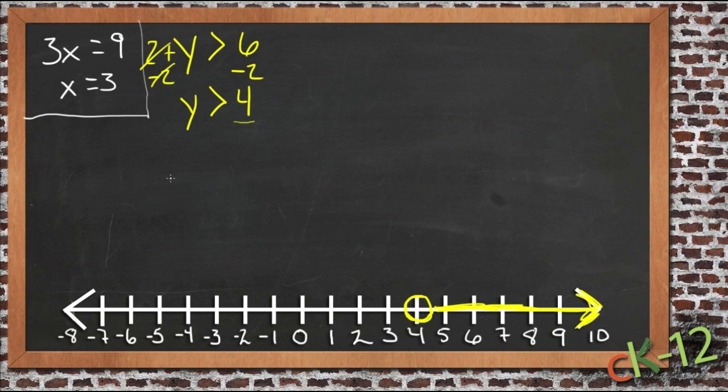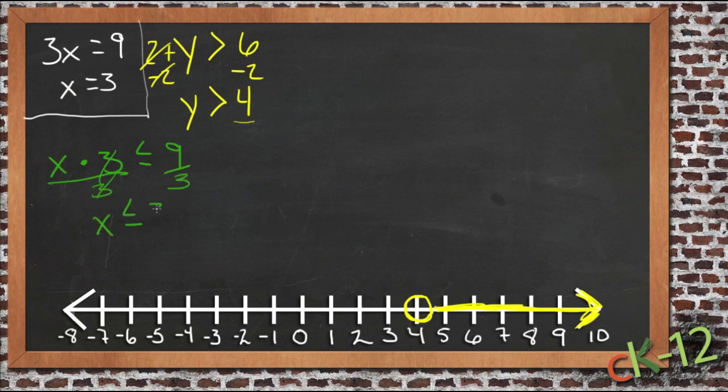Now for our second example, let's say x times 3 is less than or equal to 9. So to get rid of that times 3, we need to divide both sides by 3. Just like we would if it was an equation, divide by 3, the 3's cancel. We get x is less than or equal to 3.